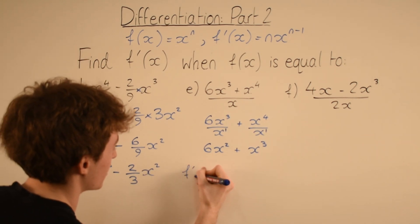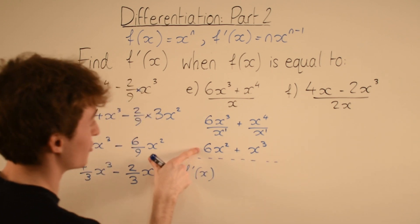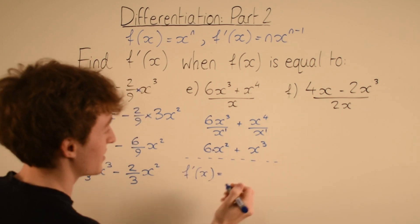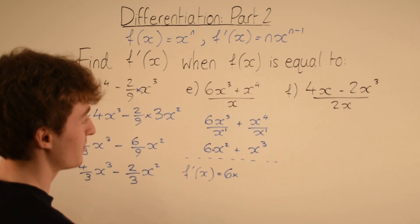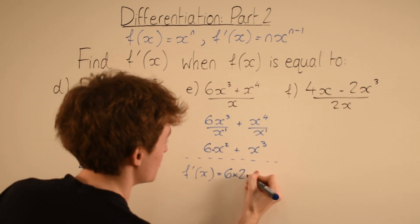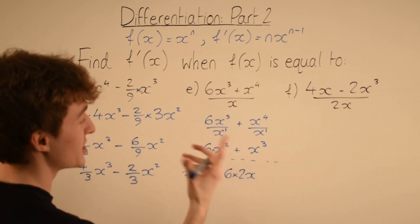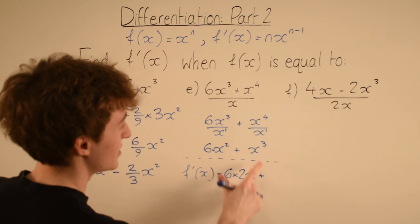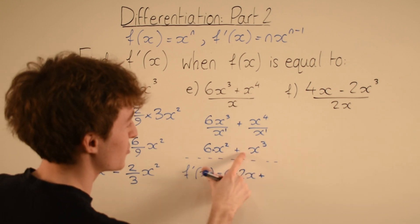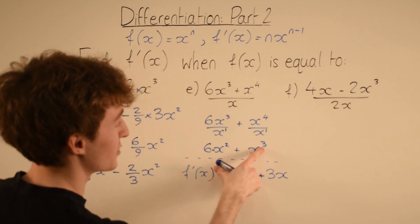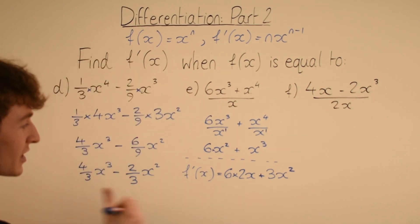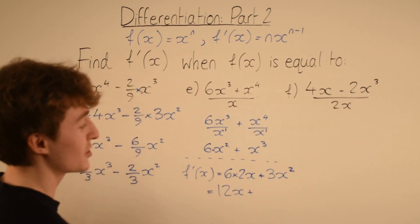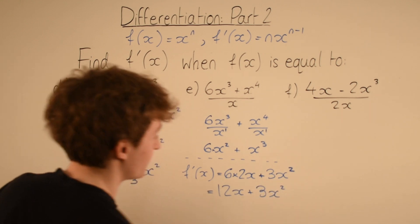Now we're ready to differentiate f'(x). Differentiating 6x squared: 6 times the derivative of x squared — the 2 comes in front giving 2x to the 1, which is just x. So 6 times 2x gives 12x. Differentiating x cubed: the 3 comes in front giving 3x to the power of 2. Simplifying: 6 times 2 is 12, so 12x. The second term is 3x squared. Final answer: 12x plus 3x squared.